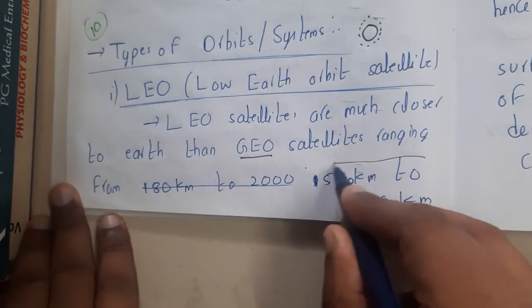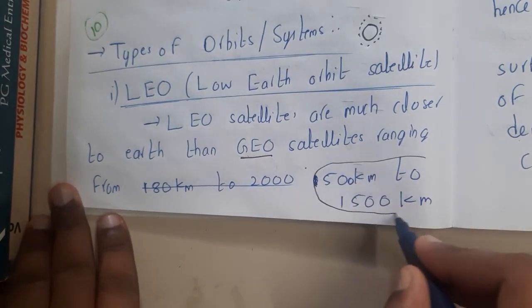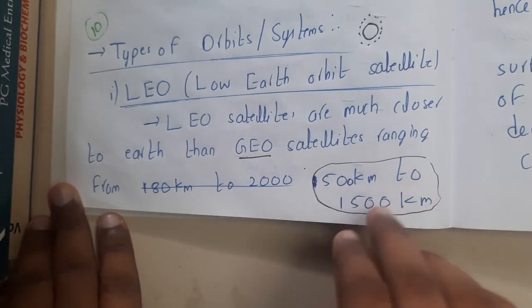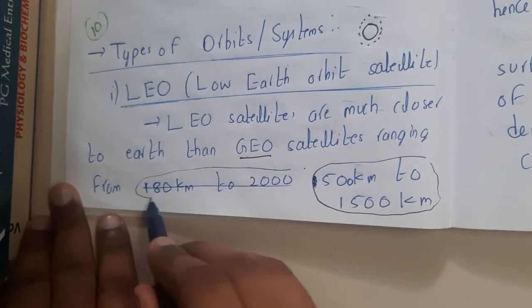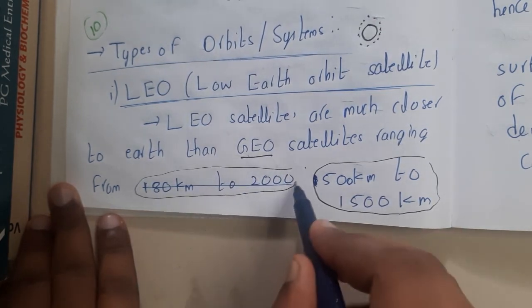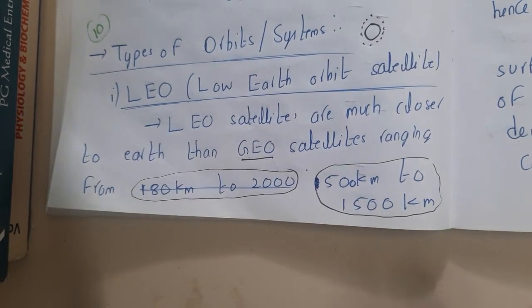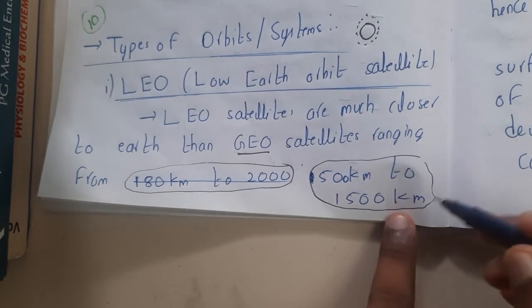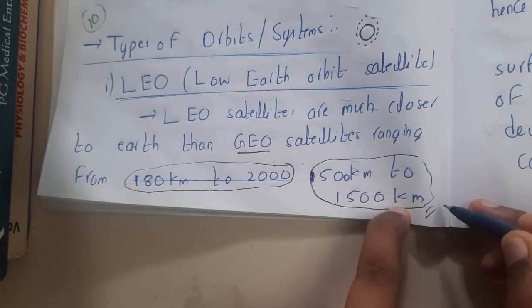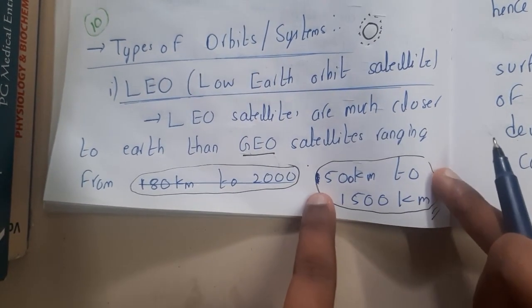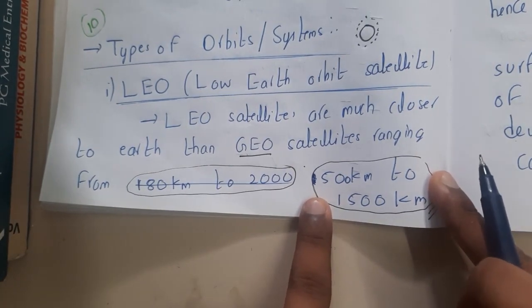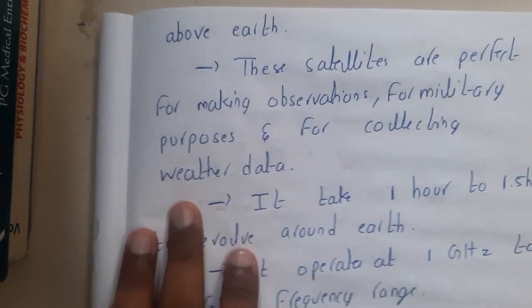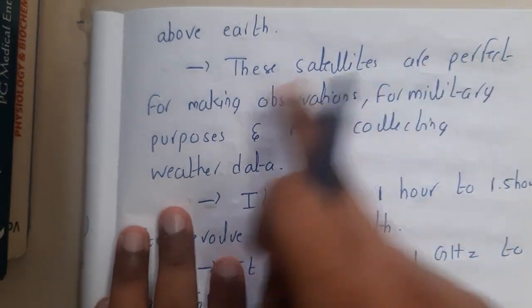The altitude range is 500 kilometers to 1500 kilometers above the earth surface. There is some variation across books — some say 180 km to 2000 km — but we'll be using 500 km to 1500 km.